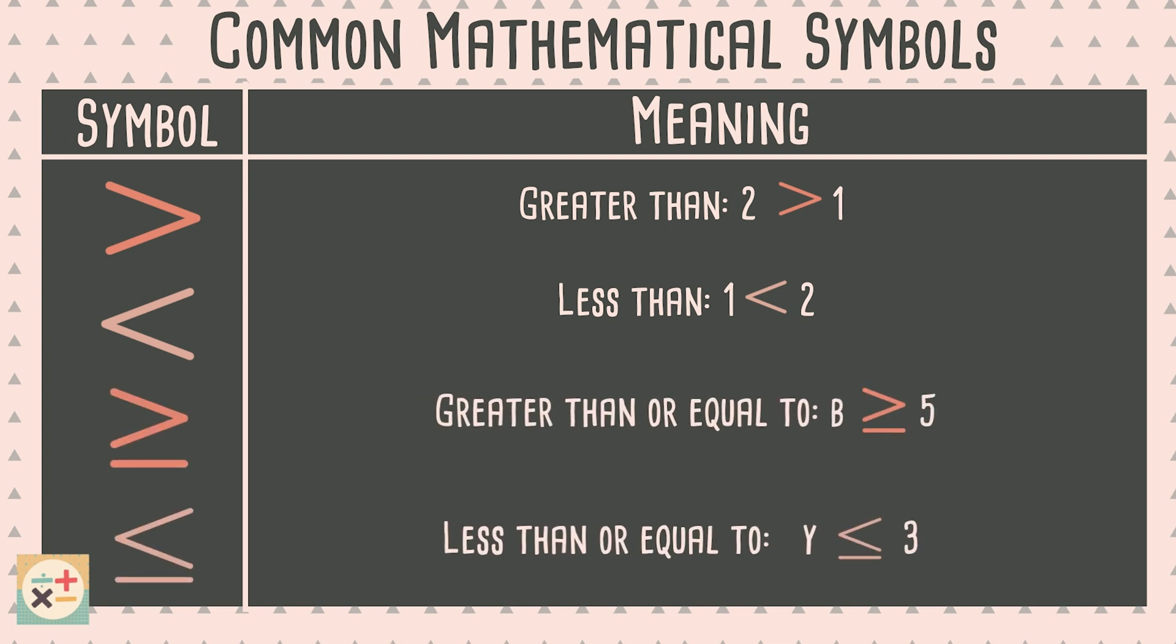When these same symbols have a line underneath, it means the value on the left of the symbol can also be equal to the value on the right.